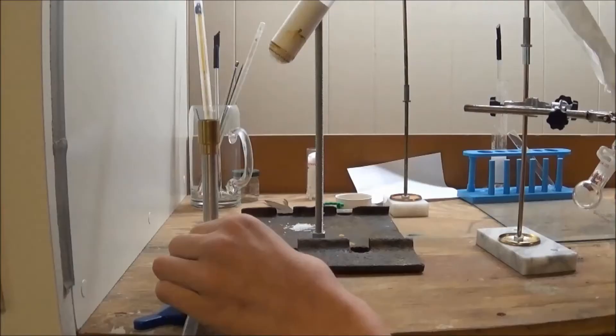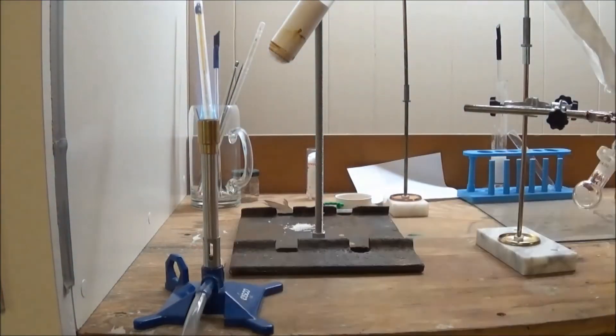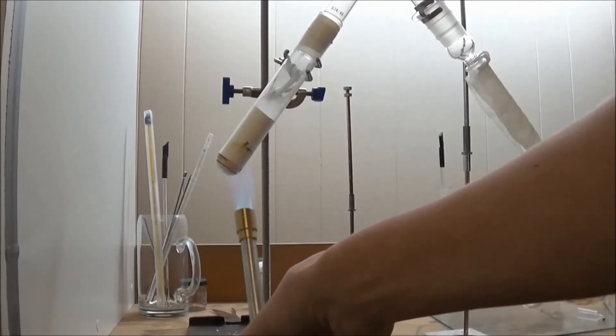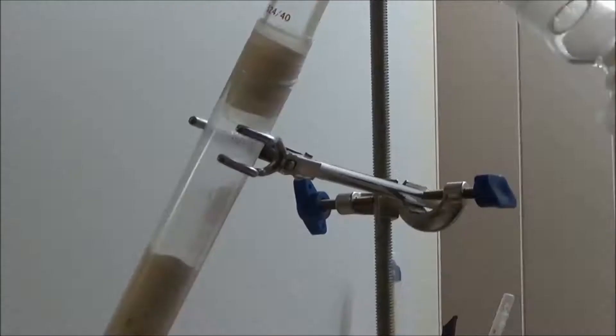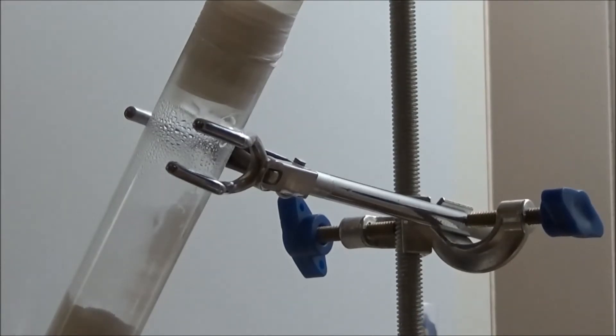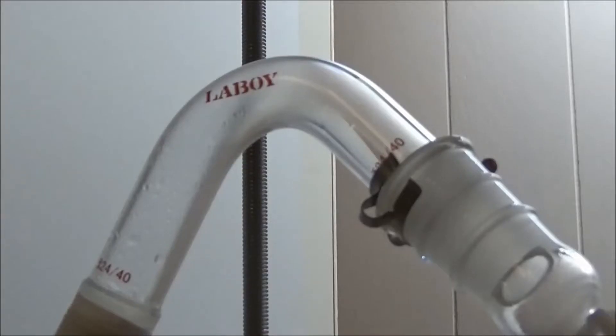When I was ready I lit my Bunsen burner and began to gently heat the test tube. After a minute or so I began to see condensation on the glass. With further heating, vapors managed to reach the condenser.